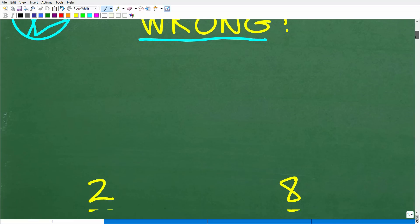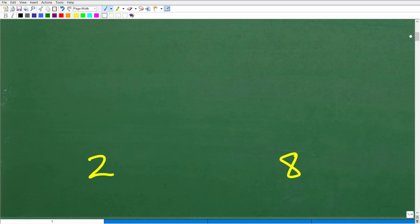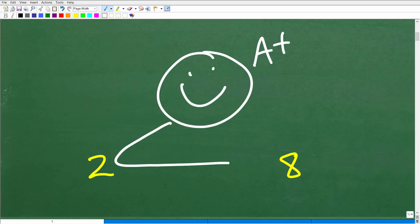So the answer is what? Well, I have two answers here. One is right and one is wrong. Someone is going to get this nice little happy face and A+. Who is it? Is it the person that got 2? Well, no, it's actually the person that got an 8.